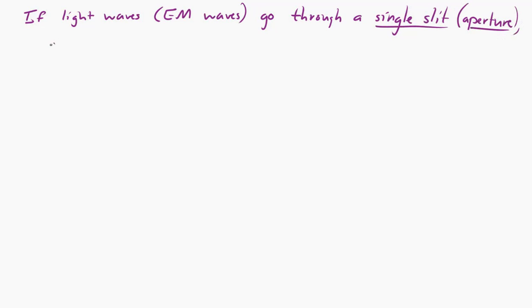So it turns out that if you send light waves through a single slit or aperture, you will get a strange pattern when they reach a screen on the other side of that aperture. You will see bright and dark fringes, a little bit like the double slit, but there's some important differences.